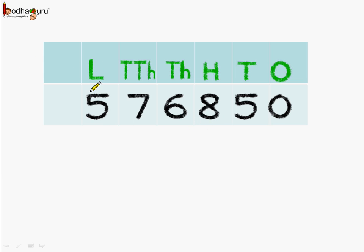See — 5 is under lakh, so it should be 5 lakh. And 7 is under 10,000, so 70,000. And 6 is under 1,000, so 6,000. And 8 is under 100's place, so 800. 5 is under 10's place, so 50. And 0 is under 1's place, so 0 only.